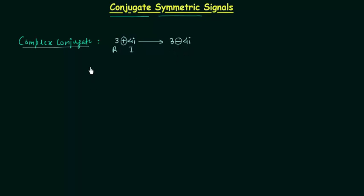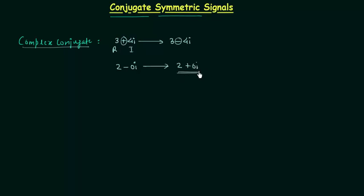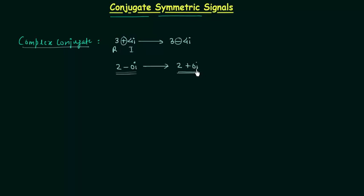I hope you now understand what we mean by complex conjugate. If the imaginary part is equal to 0 — for example, 2 minus 0i — then the complex conjugate 2 plus 0i is the same as the original complex number, because minus 0i is not different from plus 0i.